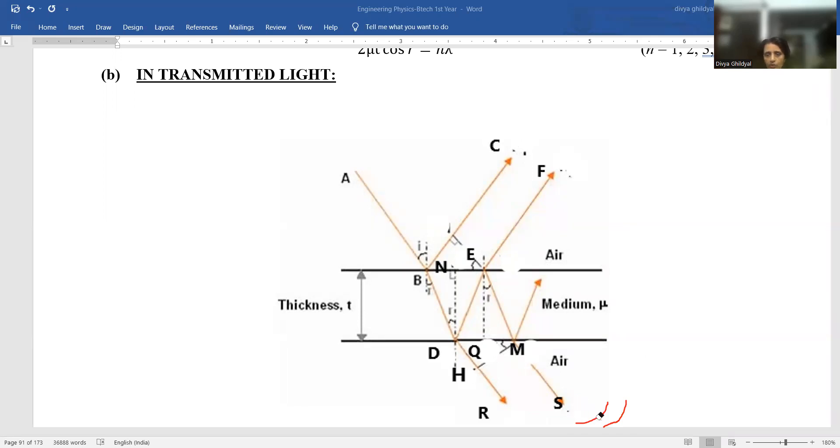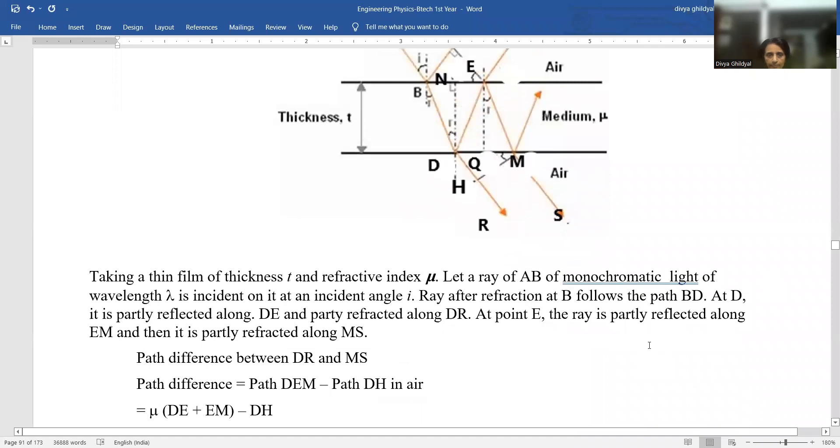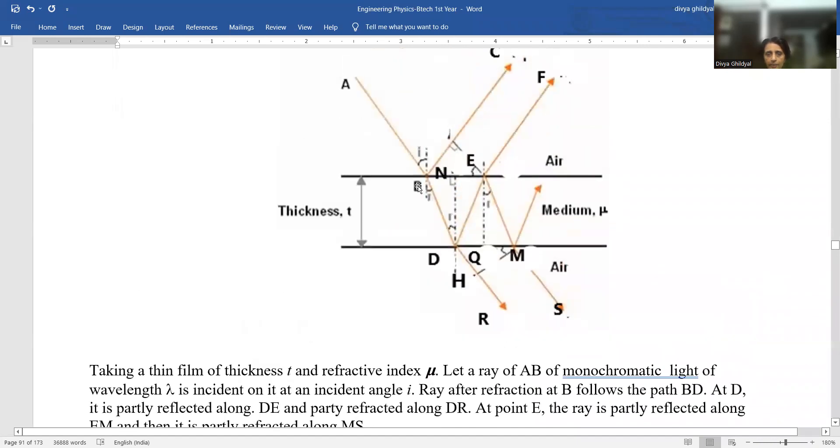Now we are going to find a formula for path difference between rays in transmitted light. Taking a thin film of thickness T and refractive index mu, let A, B be the monochromatic light of wavelength lambda incident at an angle I.